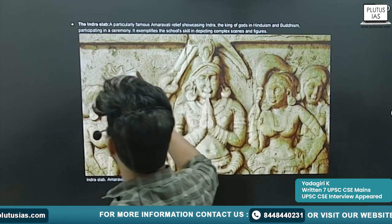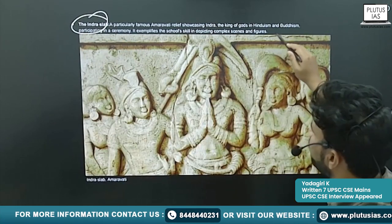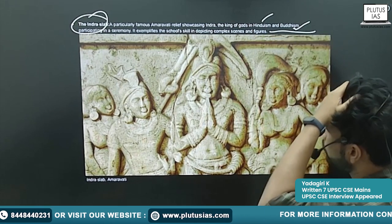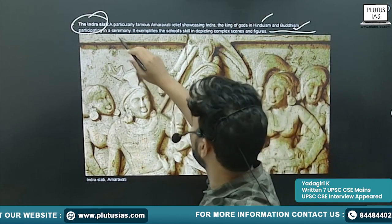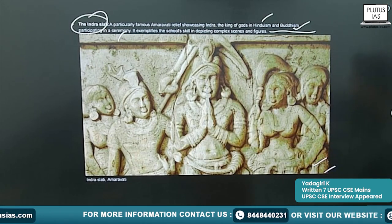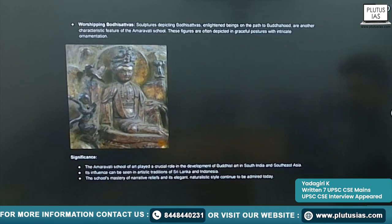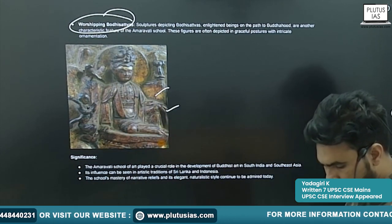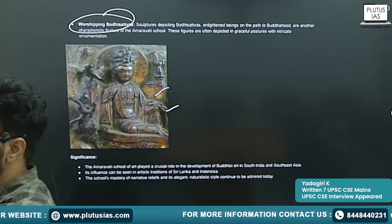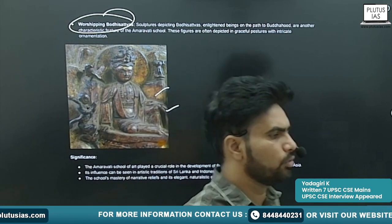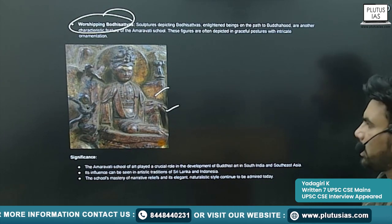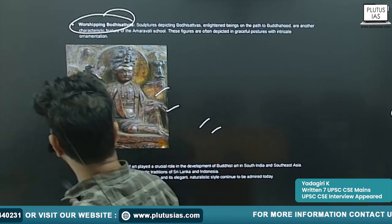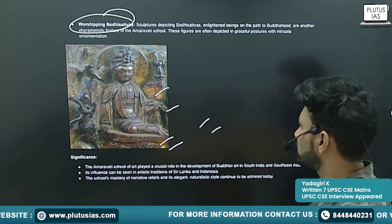Next is the Indrasabha or Indraslab. This is the figurine of Bodhisattva. Bodhisattvas are the previous births of Buddha, mentioned in detail in the Jataka tales. In the Amaravati School of Art, you will also find the depiction of Bodhisattvas.